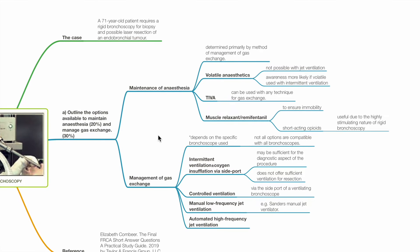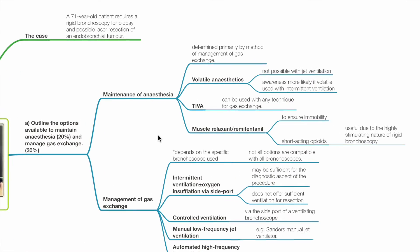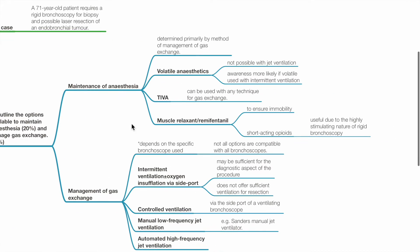Outline the options available to maintain anesthesia and manage gas exchange. Maintenance of anesthesia is determined primarily by method of management of gas exchange. Options include volatile anesthetics, though this is not possible with jet ventilation. Awareness is more likely if volatile agent is used with intermittent ventilation.